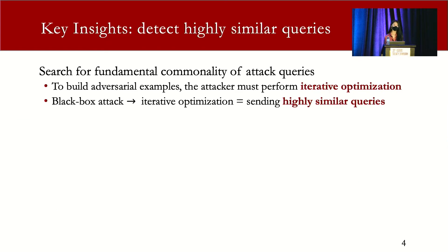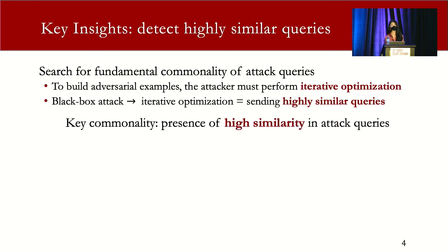So how do we detect these attack queries? What do these attacks share in common? To build adversarial examples, the attacker must perform iterative optimization. And in the black box scenario, iterative optimization means sending highly similar queries, because the attacker needs to minimize the delta between the original query and the adversarial example. So the key commonality here is the presence of high similarity in the attack queries.